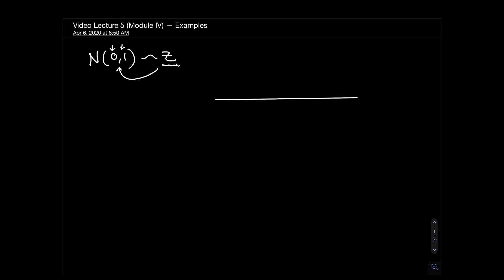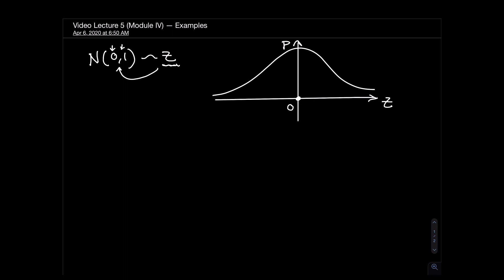If I were to draw the normal distribution graph, the x-axis will be the z-axis and the y-axis will be the probability axis. For a standard normal distribution, the center is always zero, which means the mean is always zero. We're going to be working with two directional calculations: I give you a z-score and ask you to find a probability, or I give you the probability and ask you to calculate the z-score.